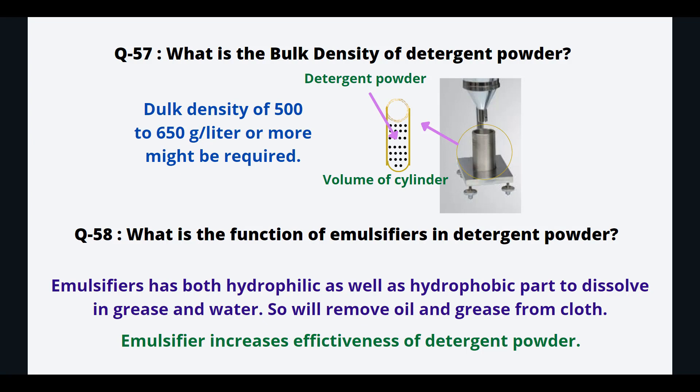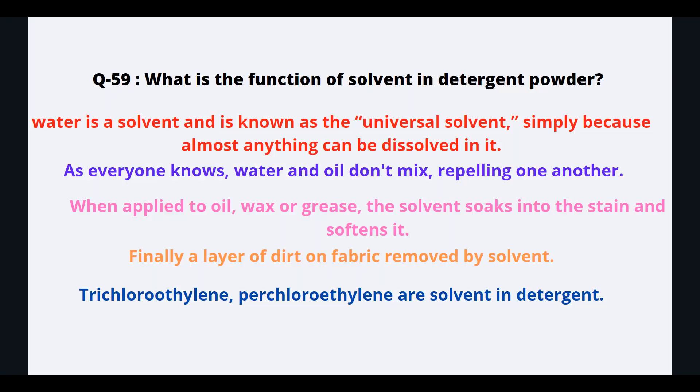What is the function of emulsification in detergent powder? Emulsification has both hydrophilic and hydrophobic parts to dissolve in greasy and water environments, so it will remove oil and grease from cloth. Emulsification increases the effectiveness of detergent powder.